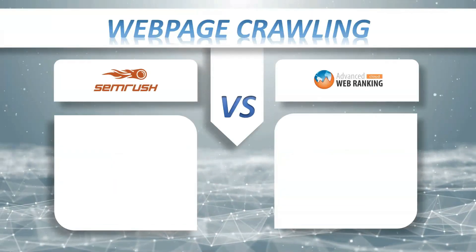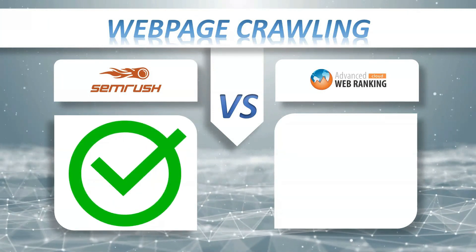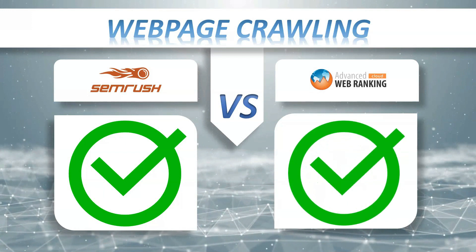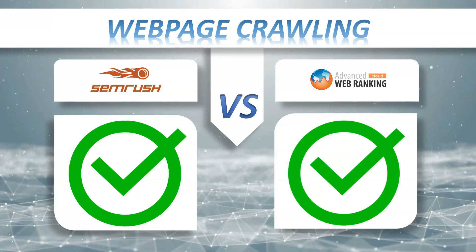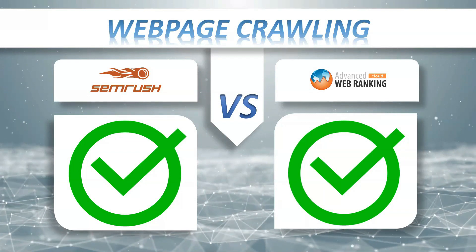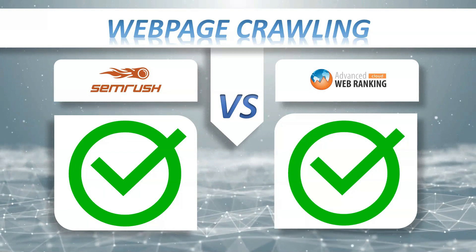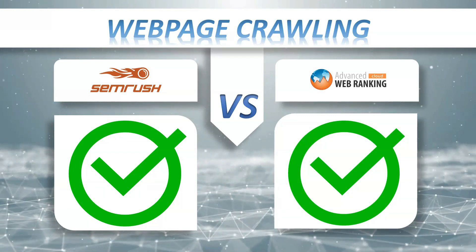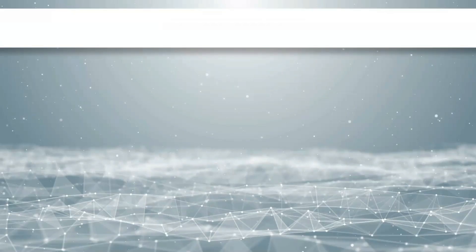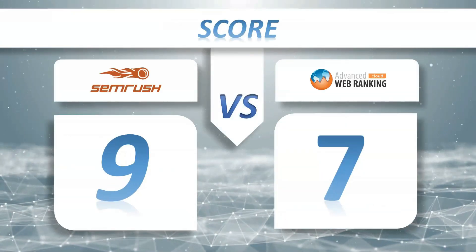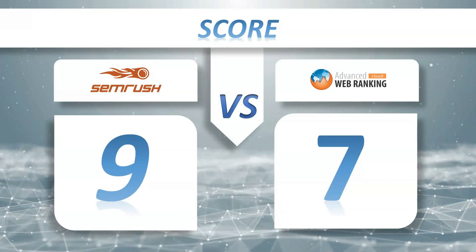Web page crawling: SEMrush plus, AWR Cloud plus. The site audit tool crawls all the pages it finds on your website, then provides an overall SEO health score, visualizes key data in charts, flags all possible SEO issues, and provides recommendations on how to fix them. Score so far: SEMrush 9, AWR Cloud 7.